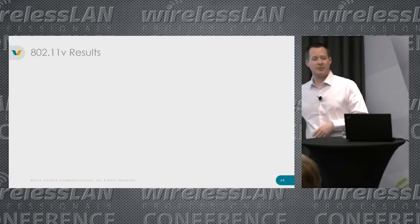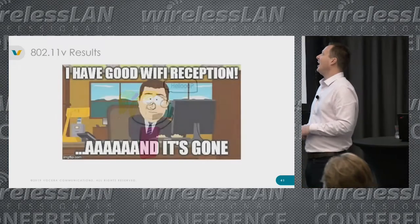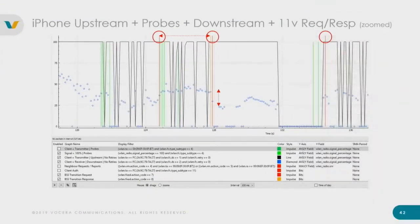My 11v results were not good. Here's a zoomed-in capture from my iPhone showing lots of breaks in communication while trying to transition. The first red circle is where the network told me to go somewhere else — that was my 11v transition request. It then took all that time for the iPhone to scan and decide where to go — 11k was off — and then it responded 'okay I'm moving,' and proceeded to move to an AP with even worse signal because it had been told to move and felt threatened.